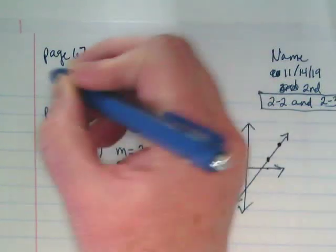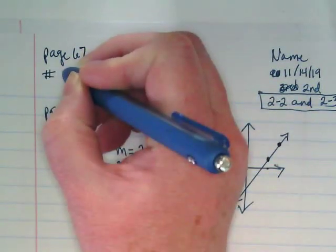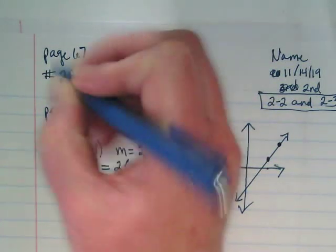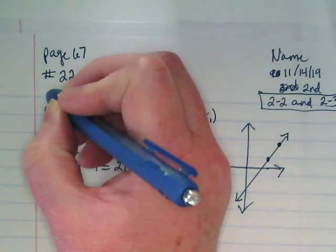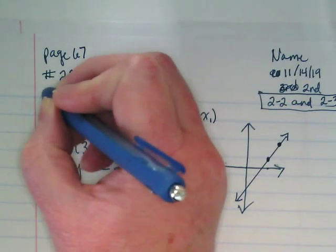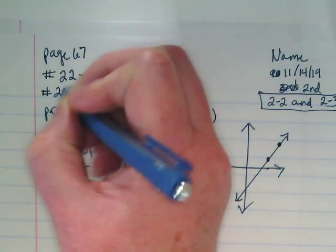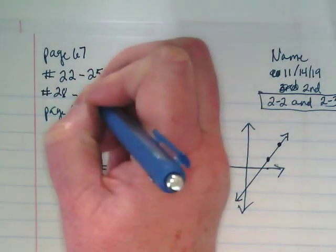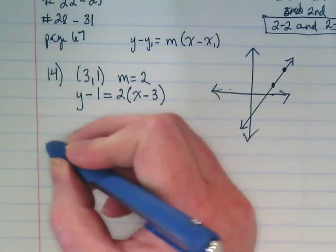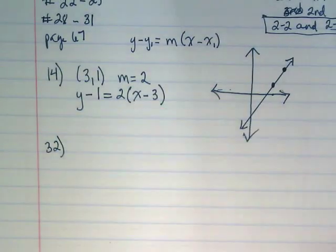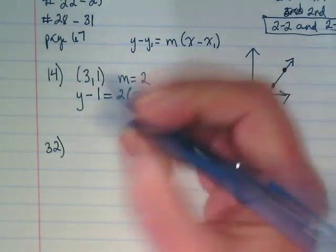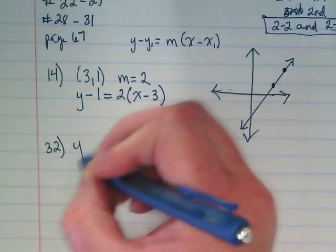I want you to do problems 22 through 25. And then you're going to do 28 through 31. We're going to do 32 together right now because it doesn't come with this lovely here's a point and here's our slope. Instead you're given equations. So here's what 32 looks like.